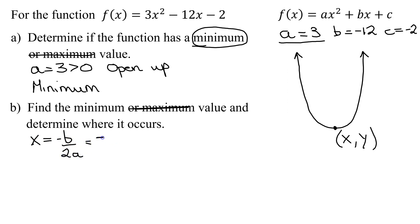So in our case, it's the opposite of b is negative 12. So it's the opposite of negative 12 divided by 2 times a, which is 3. So the opposite of negative 12 is positive 12 divided by 2 times 3 is 6. 12 divided by 6 is 2. Please be careful, 2 is not the minimum value of the function. 2 is the x value where the minimum occurs. To find the minimum value of the function, we need the y value of the vertex.